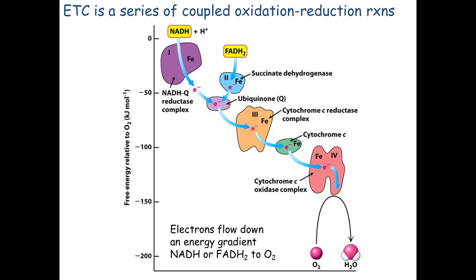NADH always donates its electrons to Complex I. FADH2 is found in Complex II, which is succinate dehydrogenase — the same enzyme from the citric acid cycle, moonlighting as one of these carriers. Complex II is succinate dehydrogenase; it's not a separate thing. It was the only membrane-bound enzyme in the citric acid cycle, which is why it fits here.